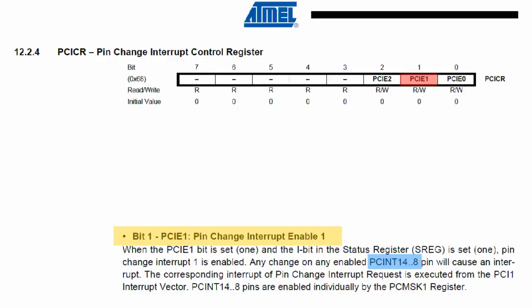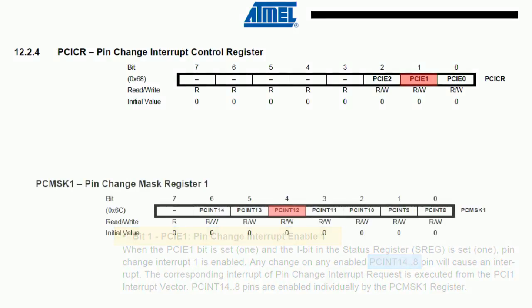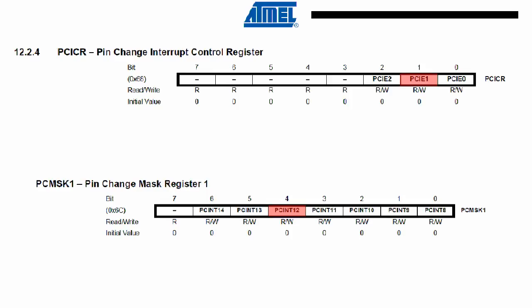So now the pin change interrupt is enabled for pin changes on PCINT14-8, but we have to set the PCmask register to enable the individual pins to trigger the interrupt. Since we are setting pin change interrupt 1, we set PCmask 1 and turn on the corresponding bit for PCINT12.